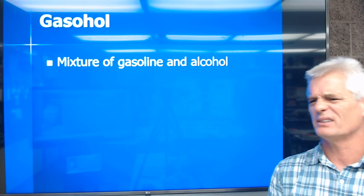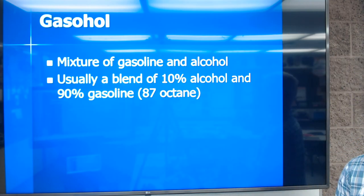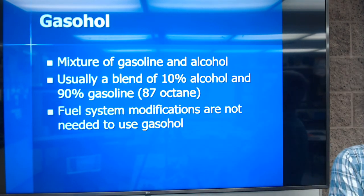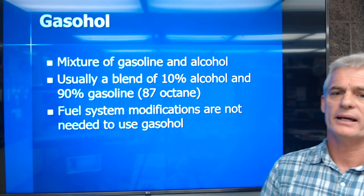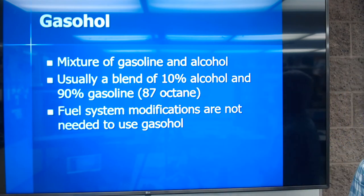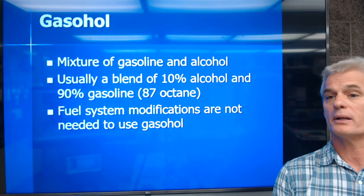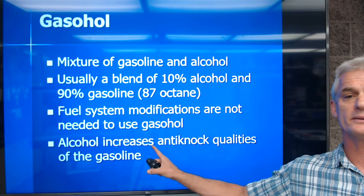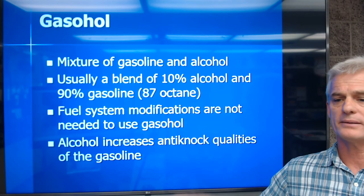Gasohol was something in the 70s and 80s — a mix of about 80 to 90 percent gasoline and 10 percent alcohol. You won't hear about it much anymore. Fuel system modifications weren't needed. These days in the summertime, we use an oxygenated alcohol-type blend to help with emissions. Alcohol also increases anti-knock qualities because it has higher octane — it resists detonation, which is what we call anti-knock qualities.